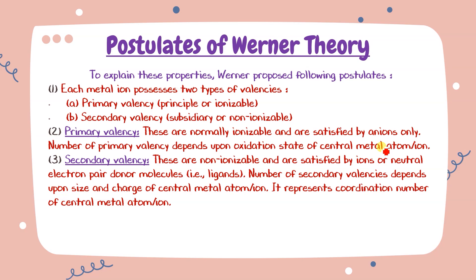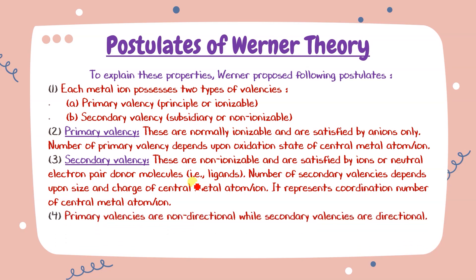The number of secondary valencies depends on the size and charge of the central atom or ion — it represents the coordination number. Primary valencies are non-directional (ionic bond character); secondary valencies are directional because they involve coordinate bonds, which have a particular direction.